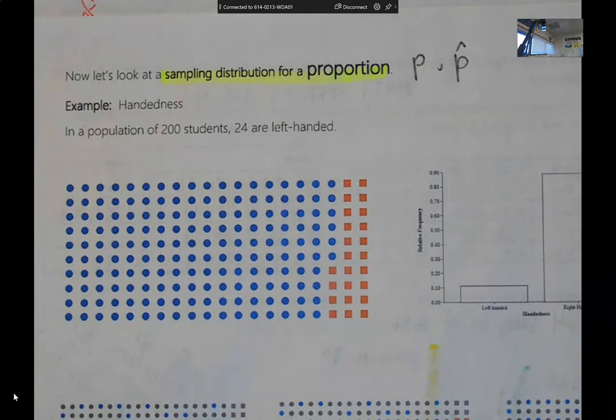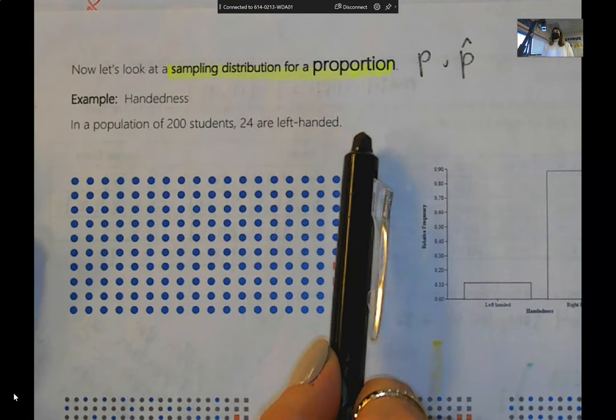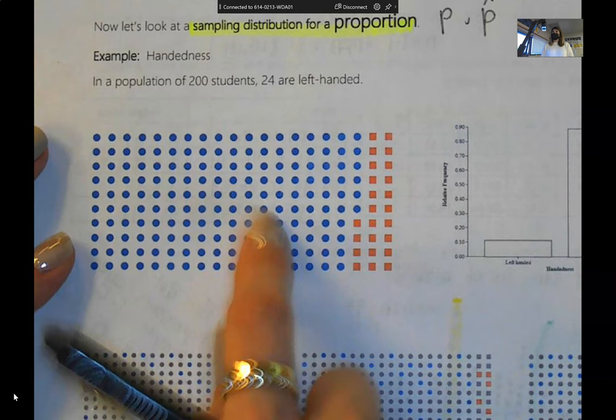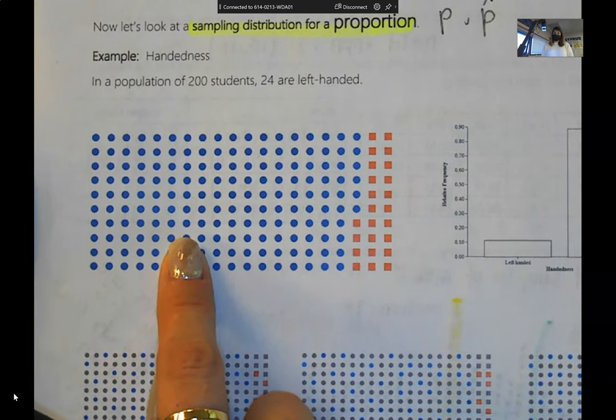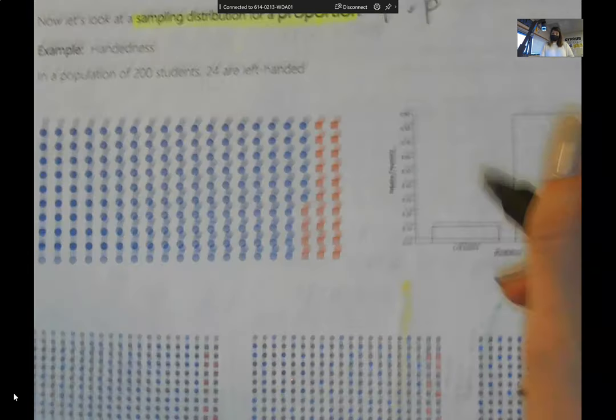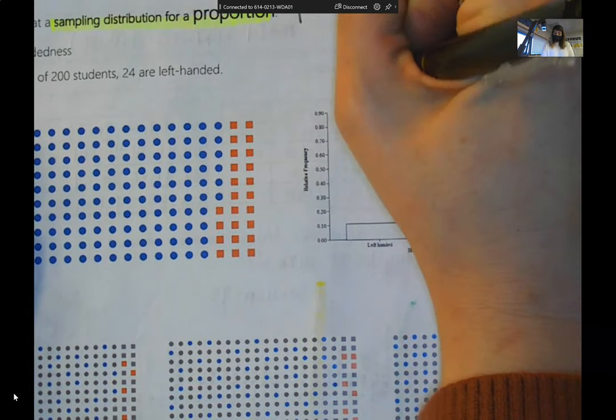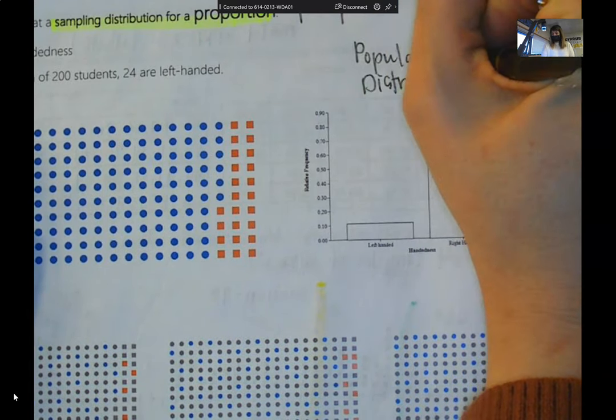The symbols for this are going to be P and P hat. P is your population proportion. P hat is your sample proportion. And the example that we're going to look at to do this is on handedness. How many kids or what percent of kids in a population are left handed? In a population of 200 students, 24 are left handed. So this is our population information. The blue circles are our right handed kids. Orange squares are our left handed kids. This is the population distribution.